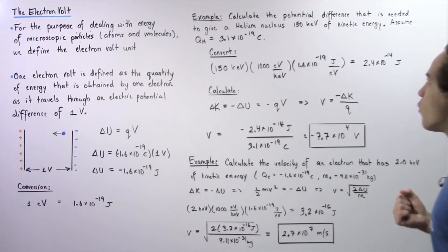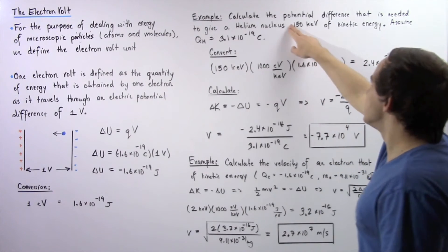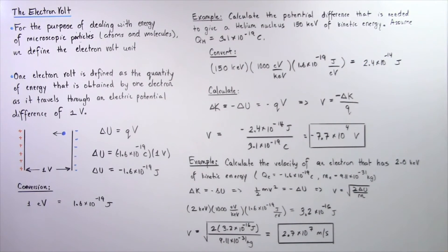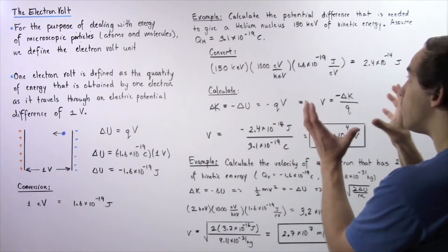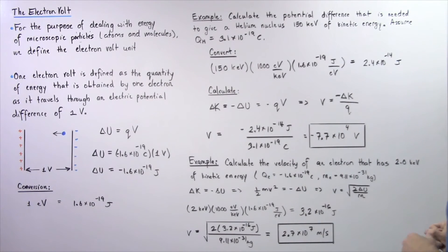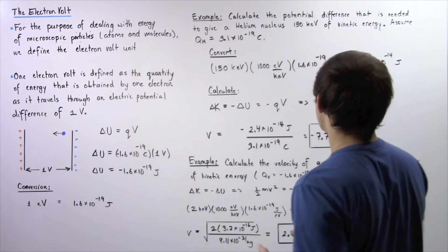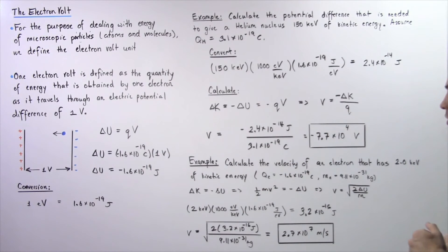This is the voltage difference required for the helium nucleus to gain that quantity of energy. It is negative because our positive nucleus is traveling from a higher potential to a lower potential.